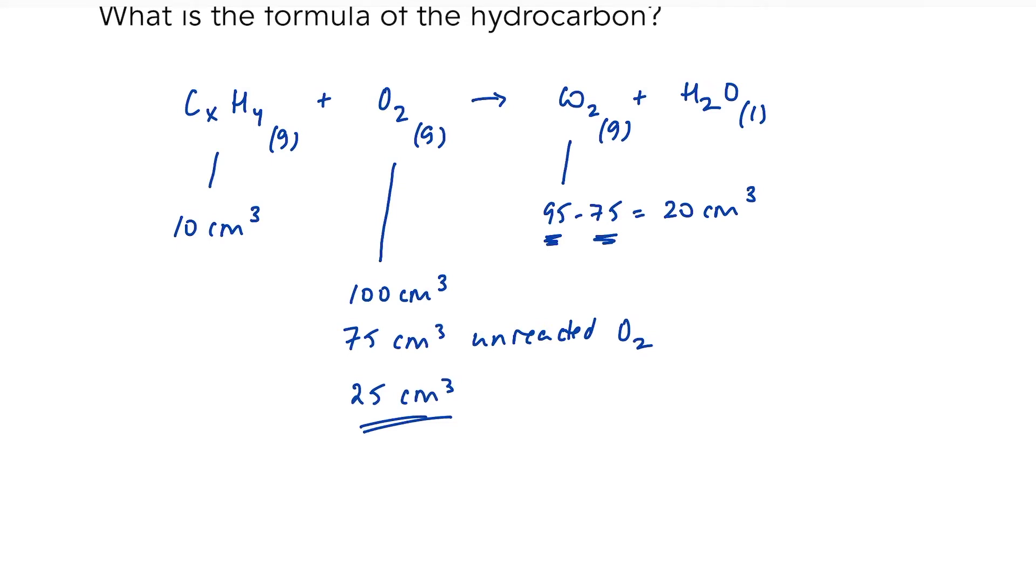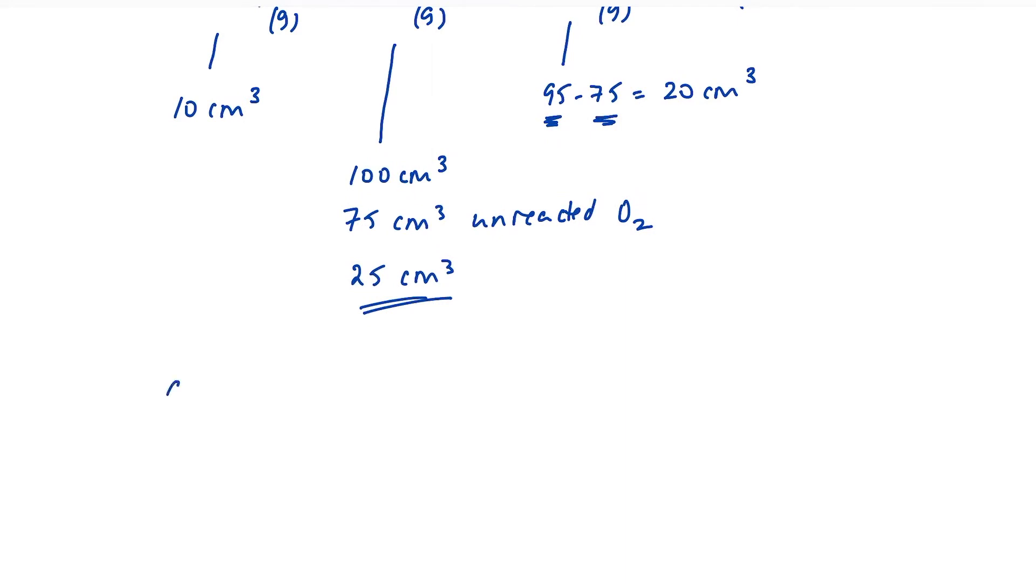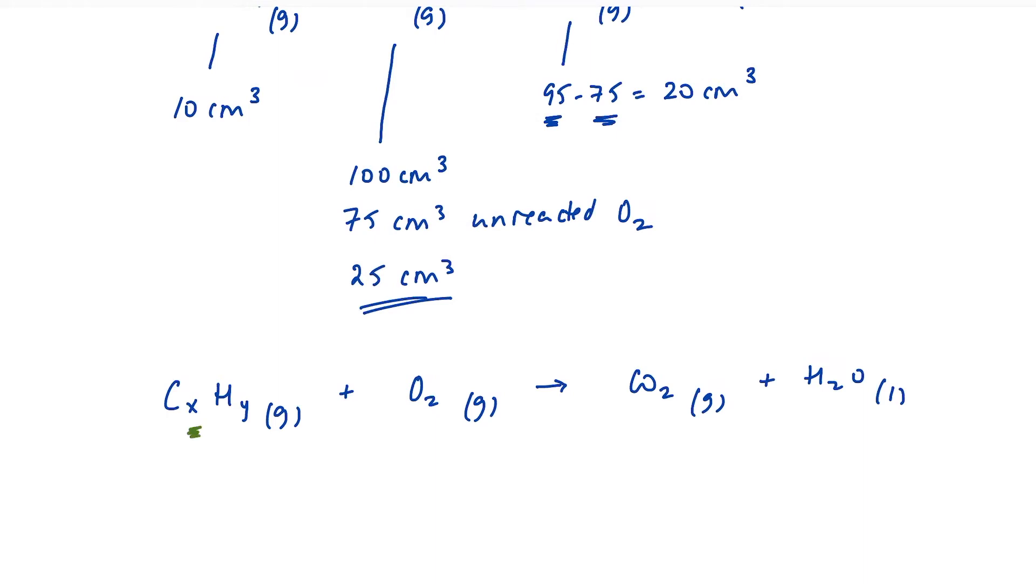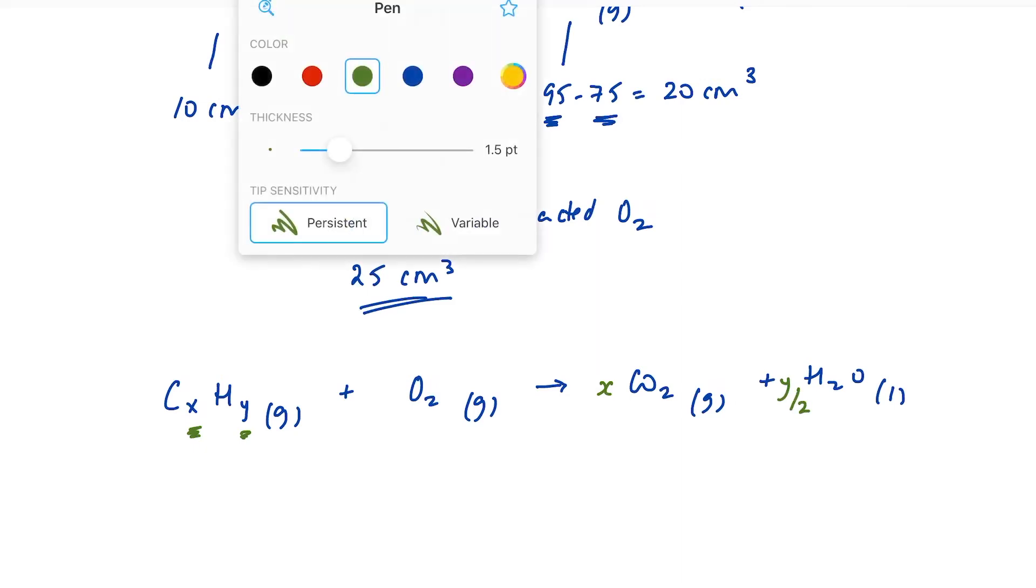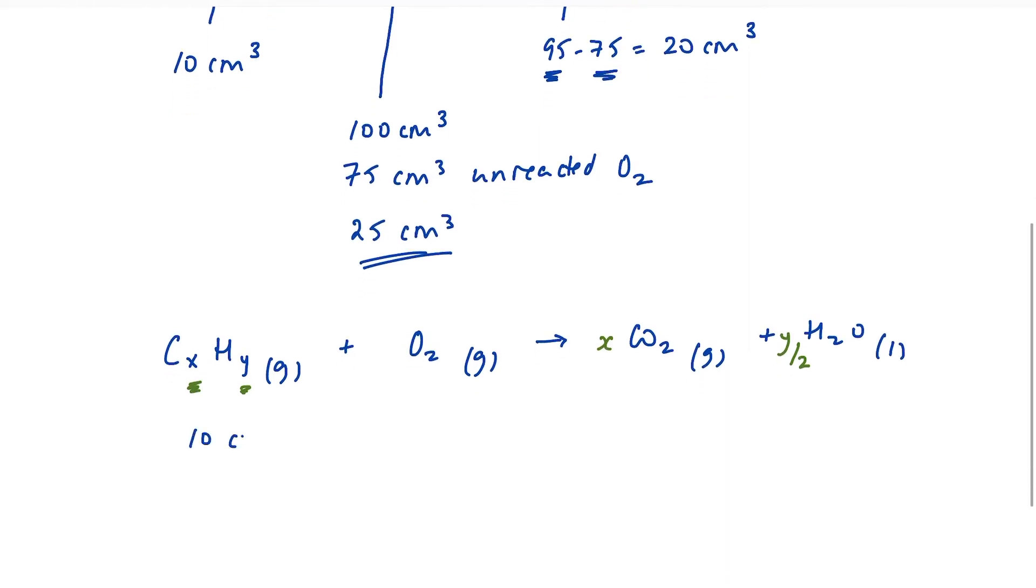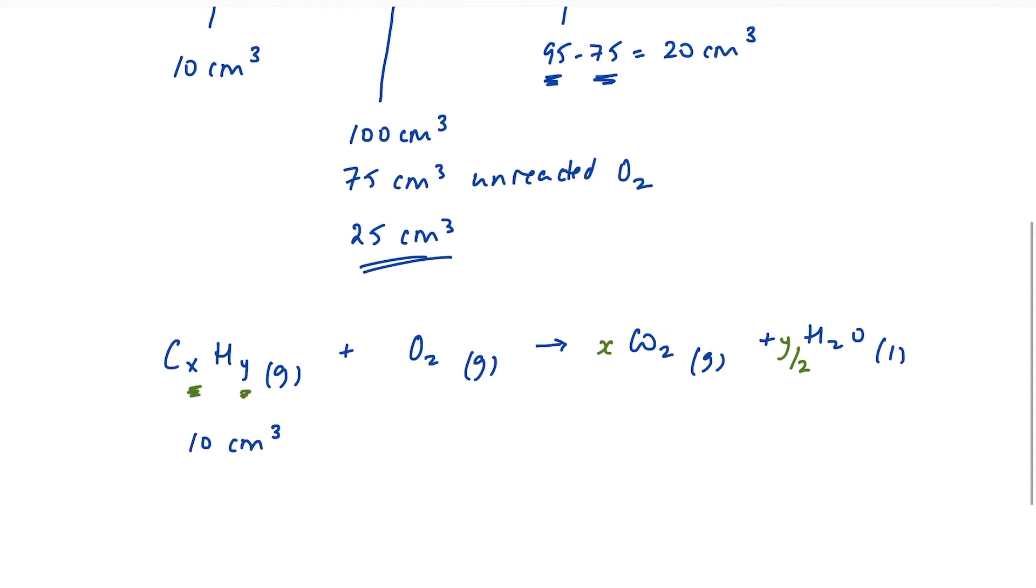Let's pull all that together and see where we're at. I know that CxHy gaseous plus O2 gaseous is going to form CO2 and H2O. Simply from the formula of my hydrocarbon, I know that if I've got X carbon atoms, I'm going to form X moles of CO2. And if I have Y hydrogen atoms, then the number of moles of water formed is going to be Y divided by 2. The information that we've just worked out in terms of volumes tells me that I have got 10 centimetres cubed of my hydrocarbon. It reacted with 25 centimetres cubed of oxygen to produce 20 centimetres cubed of carbon dioxide.